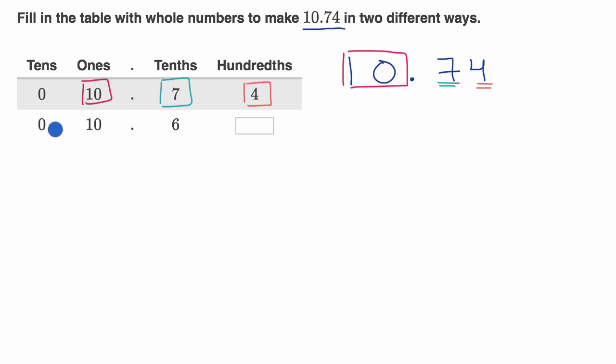But now let's see what they're doing over here. So once again, they're saying no tens, but 10 ones. So that is actually the same. We could say one 10 and zero ones, or we could say 10 ones.